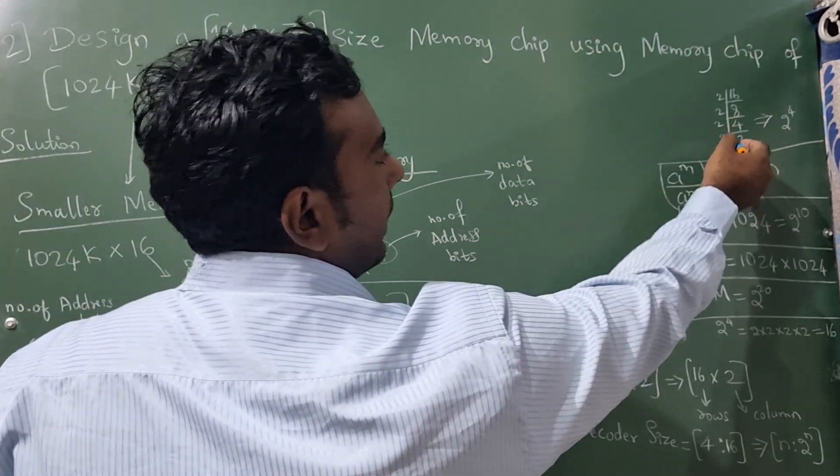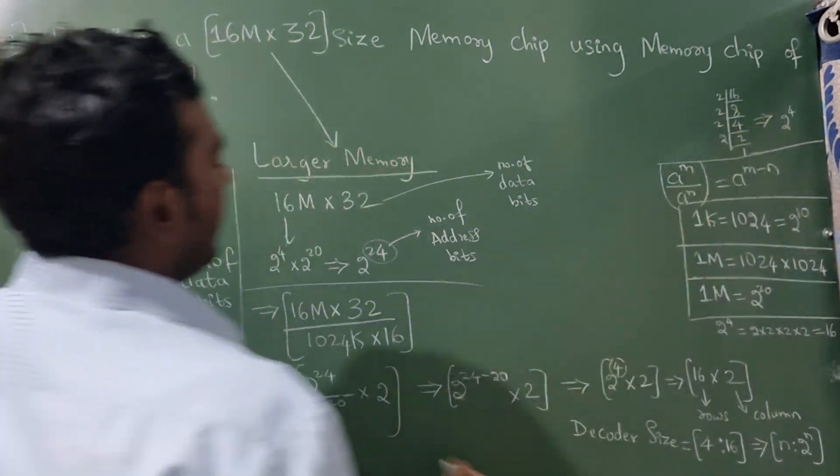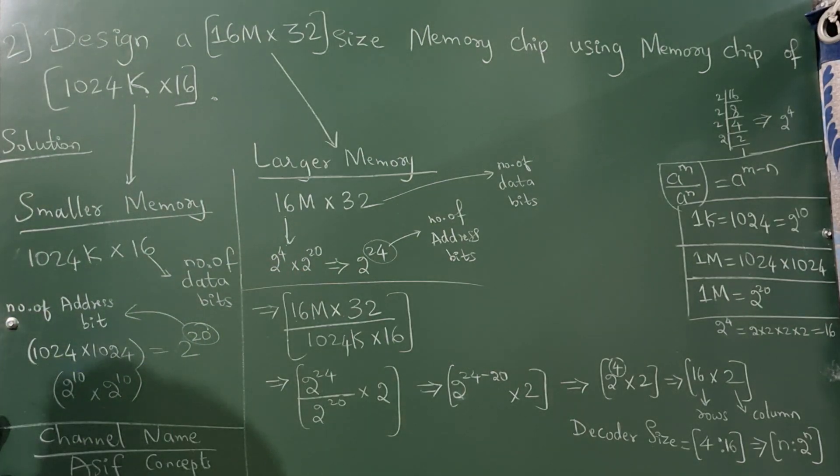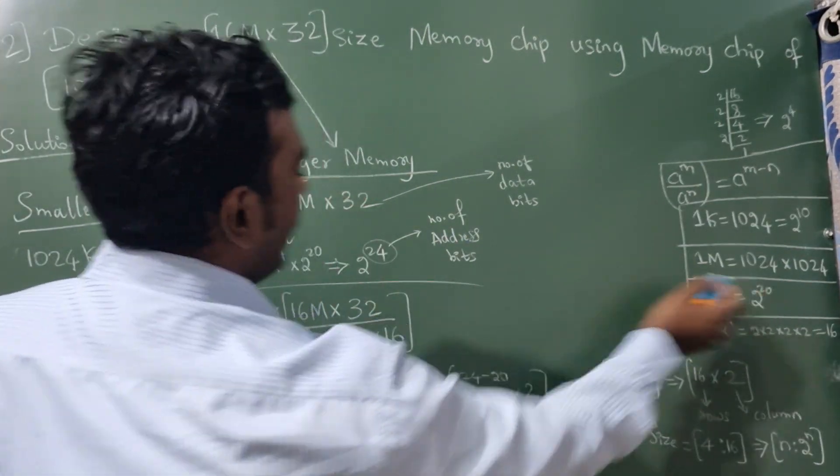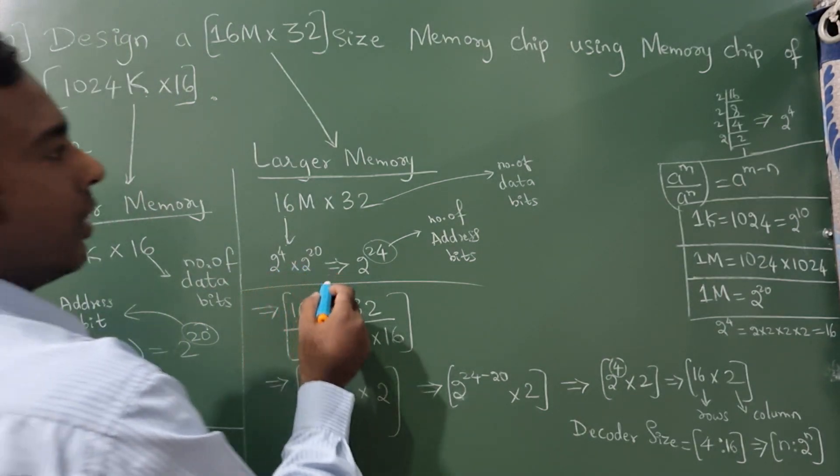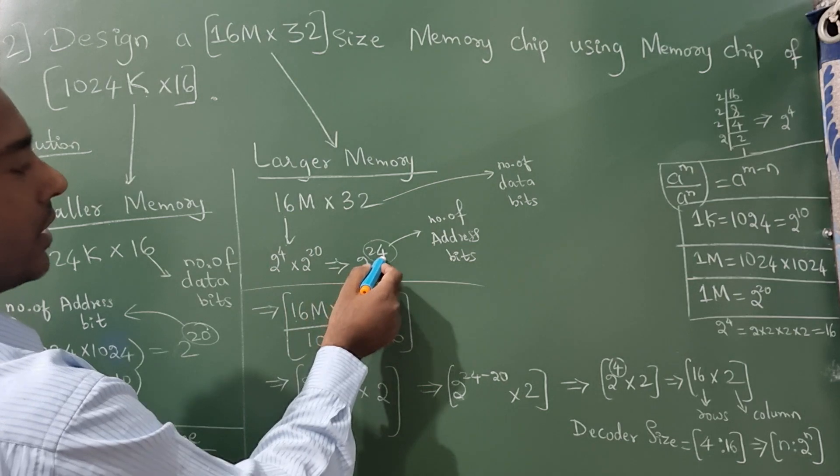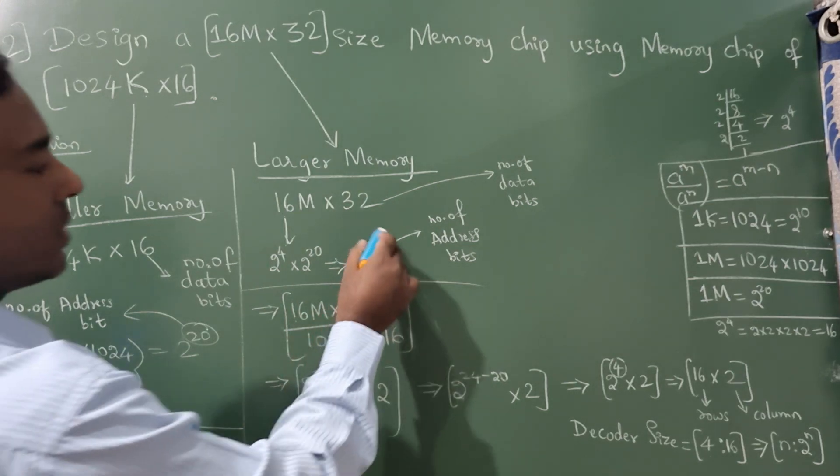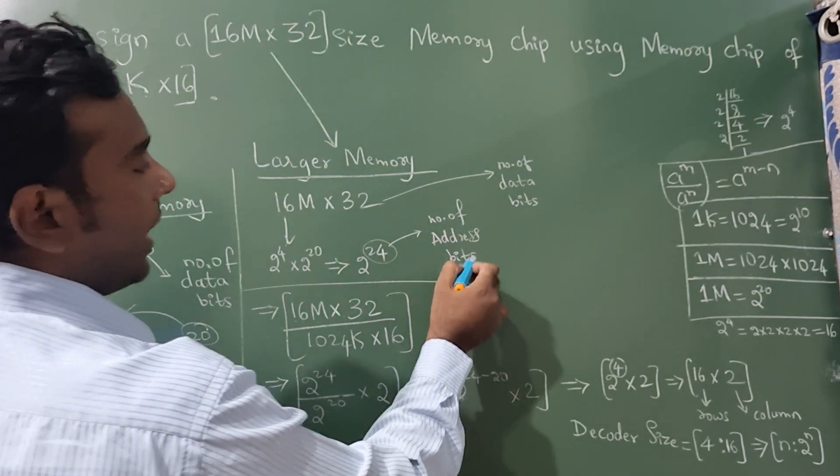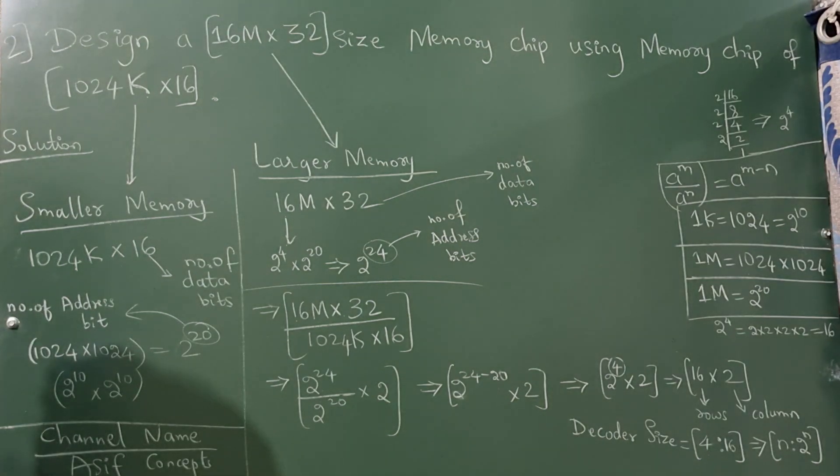Now 16 means 2 raise to 4. I have divided 16 in exponential form so it will become 2 raise to 4. M means 2 raise to 20, so 2 raise to 4 and 2 raise to 20, if you add this will get 2 raise to 24. This 24 is your number of address bits.